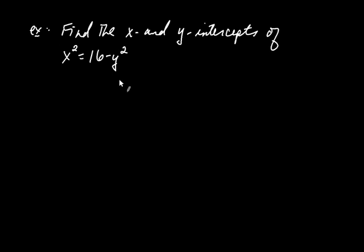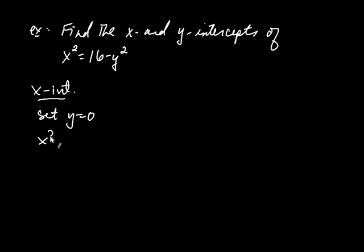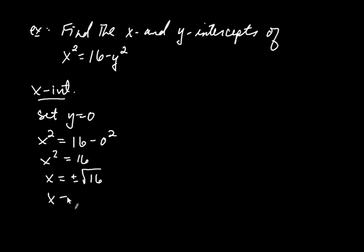Let's find the x and y-intercepts of this curve given algebraically. First, let's find the x-intercepts. To do that, we set y equal to zero. So we're looking at x squared equals 16 minus zero squared, and we solve that equation. So x squared equals 16, meaning x equals plus or minus the square root of 16, which is plus or minus 4. That gives two x-intercepts: (4, 0) and (-4, 0).